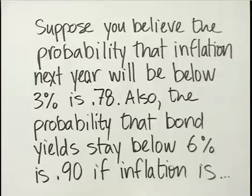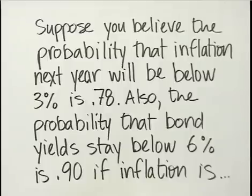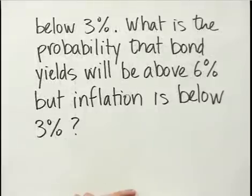Suppose you believe that the probability that inflation next year will be below 3% is 0.78, or 78%. Also, the probability that bond yields stay below 6% is 0.90 if inflation is below 3%. So what is the probability that bond yields will be above 6% but inflation is below 3%?